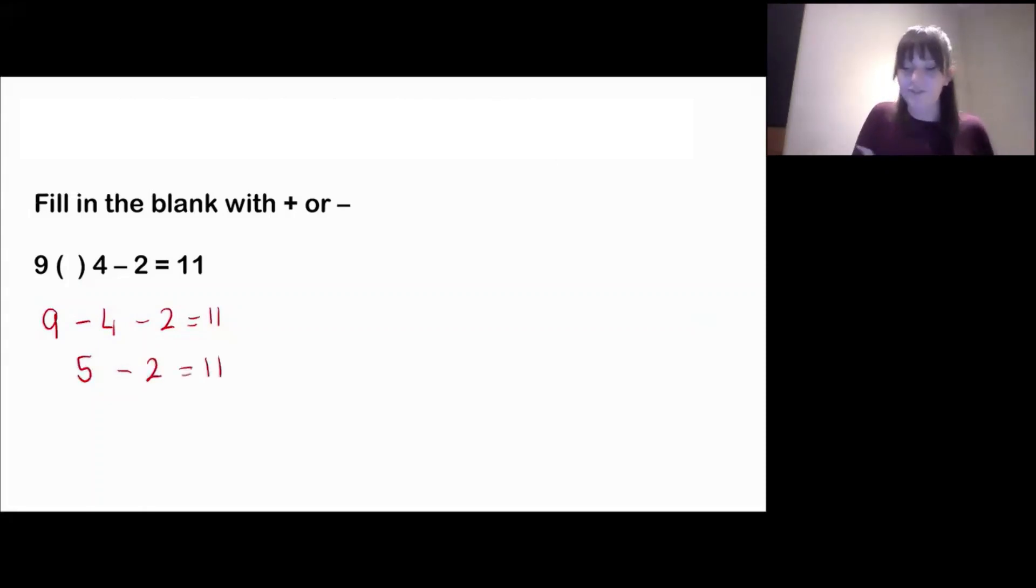So we have 5 take away 2 equals 11. What is 5 take away 2? If we take away 1, 2, we're left with 3, aren't we? So this would say 3 is equal to 11. Well, that's not right, is it? 3 is definitely not the same as 11, so our minus sign doesn't work. If we put a minus, a take away in there, then it doesn't work, we don't get 11.